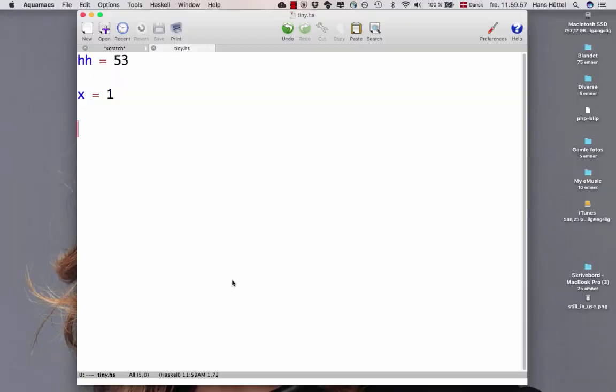Let's be concrete. Here is the program that we saw a little while ago that had a variable hh that we declared to be 53. We've made things a little more complicated. We now added another variable declaration that x is 1. These are declarations of variables.